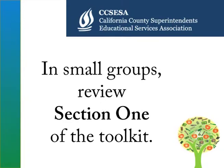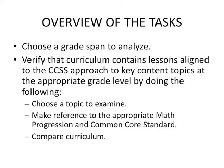Please take time now in small groups to review section one of the toolkit. Choose a grade span to analyze. Then, using the Common Core Standards and the math progressions, verify that the curriculum contains lessons aligned to the Common Core State Standards. You have a template with questions and possible topics to examine in the K-2 span, the 3-5 span, and 6-8. If you are at the high school level, you can do something similar. These topics are given to help with your curriculum decisions.